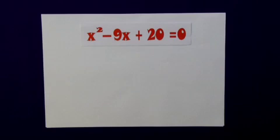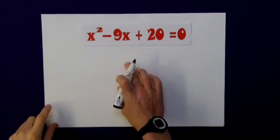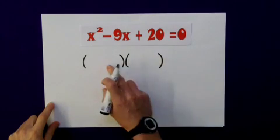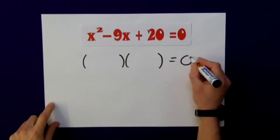Now it's not always possible to use the factorisation method but I know for this example it will work. I'm going to start by creating two sets of brackets, remembering that if I multiply these back out I will get this back. It still equals zero.